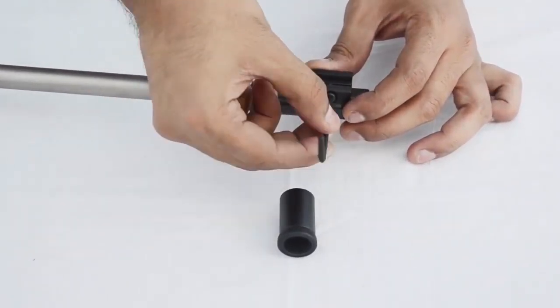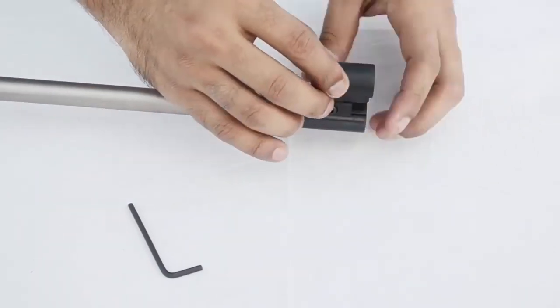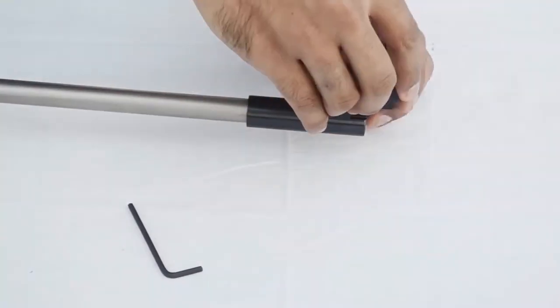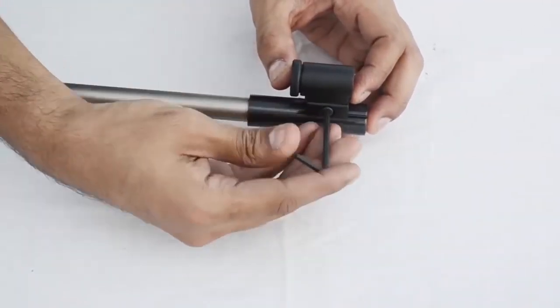Slightly loosen the clamping element and insert the front PeepSight. Adjust the position and then tighten it.